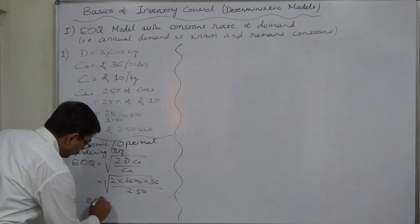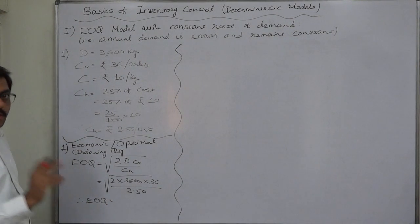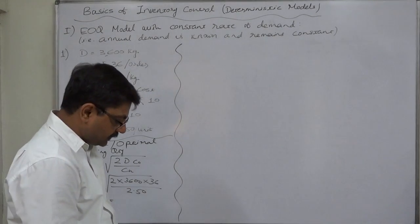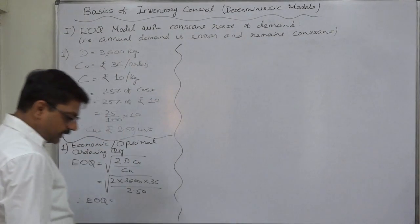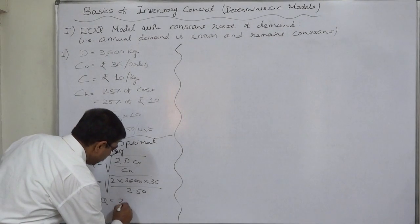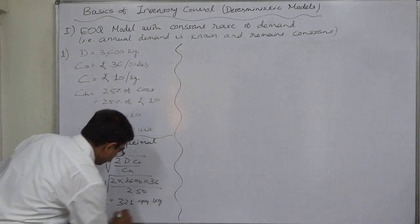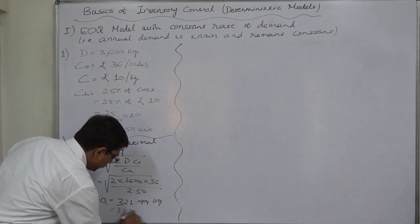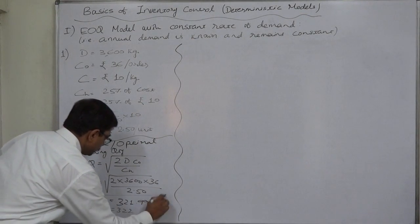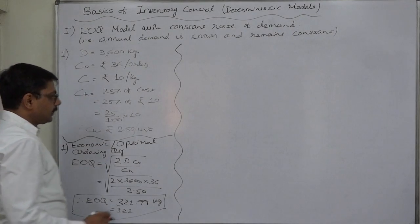EOQ, economic order quantity or optimal order quantity will be 321.99 kg. 321.99 kg or roughly 322 kg. We can round off the quantity.